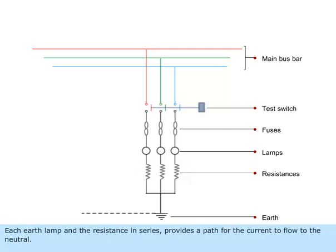Each earth lamp and resistance in series provides a path for the current to flow to the neutral.